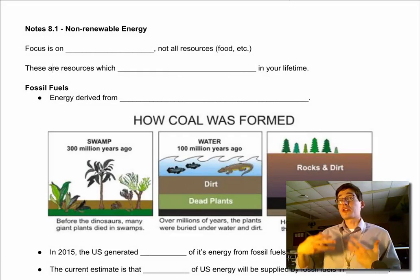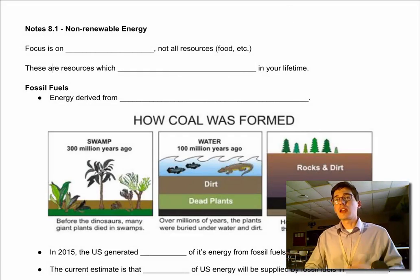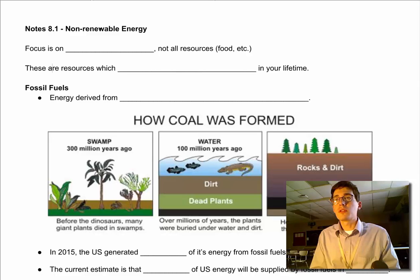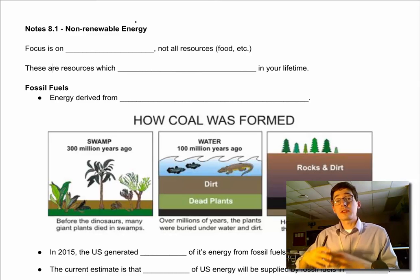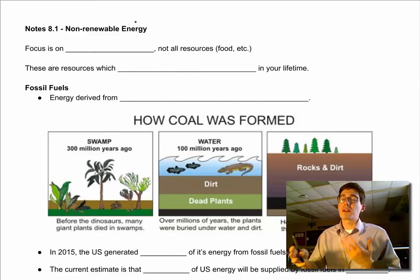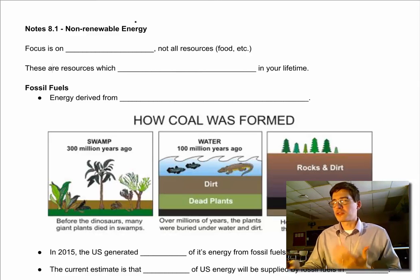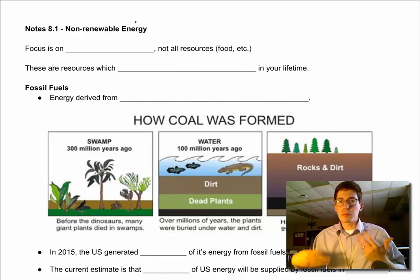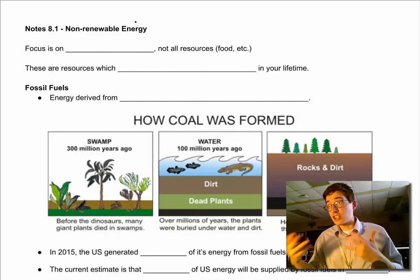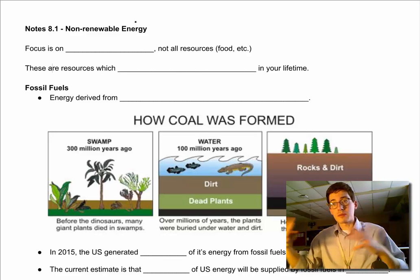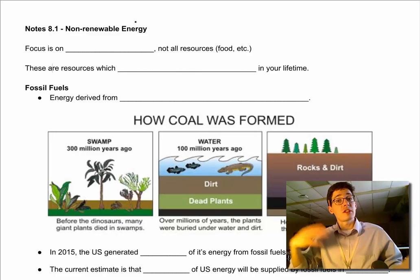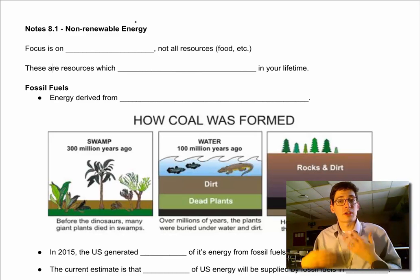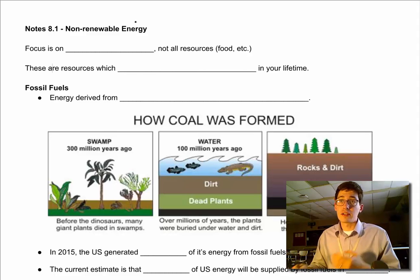Hey everybody, it's Mr. Bennett back. We're starting a new section today. We're going to start looking at non-renewable energy forms, and that's what this whole section is about. It's different types of energy — where do we get it, how do we produce it, how do we change our energy from one type to another, which we've already done a little bit of, but we're going to get more specific into society now.